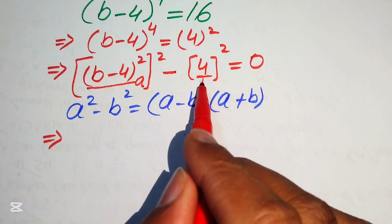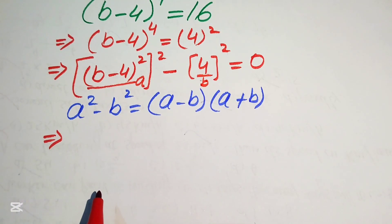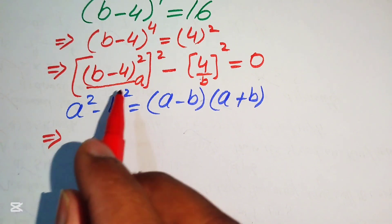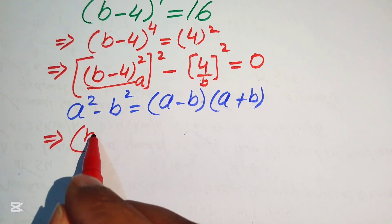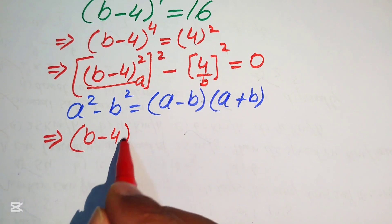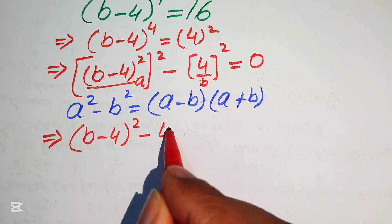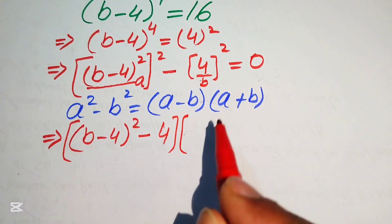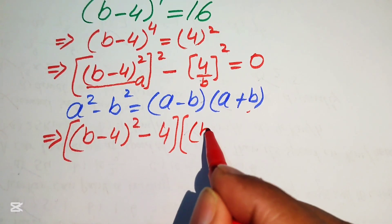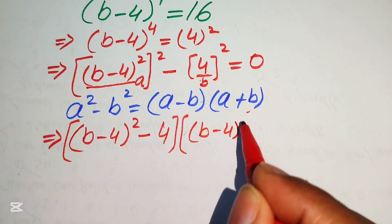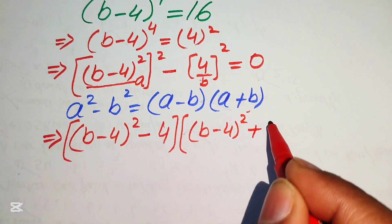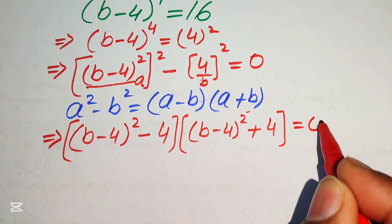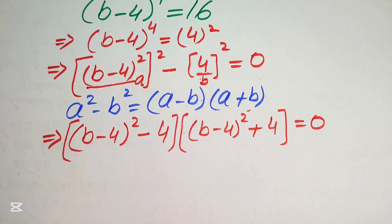Here, (b minus 4) squared is our a, and 4 is our b. Substituting these values, our equation is written as: (b minus 4) squared minus 4, times (b minus 4) squared plus 4, equals 0.